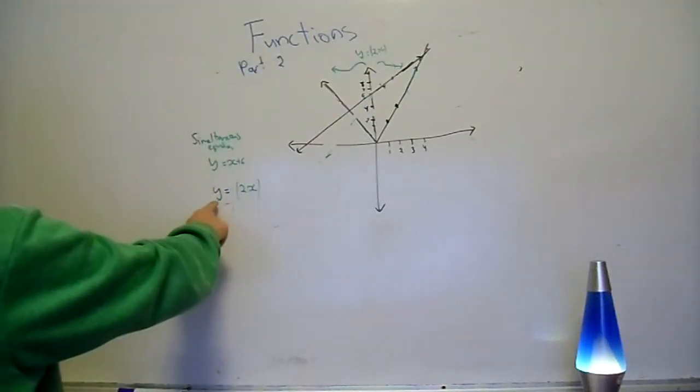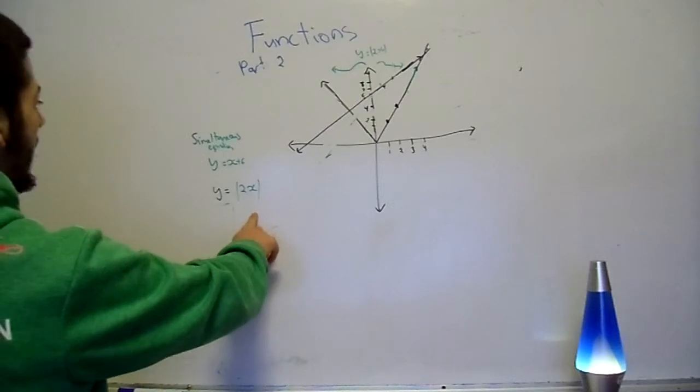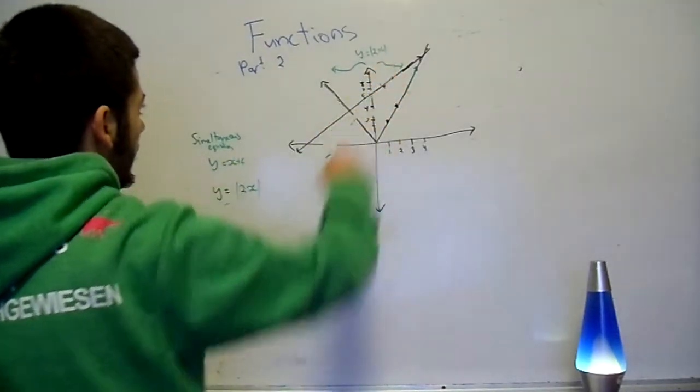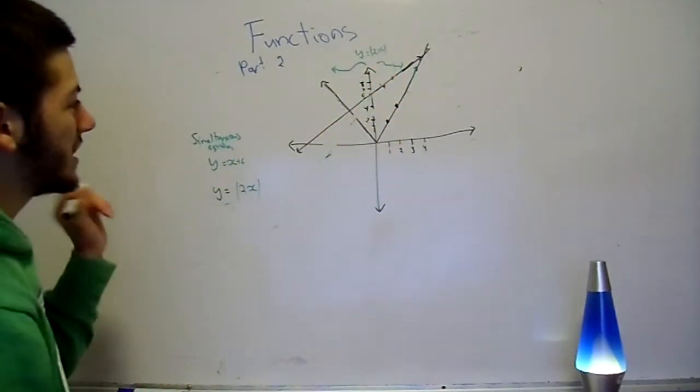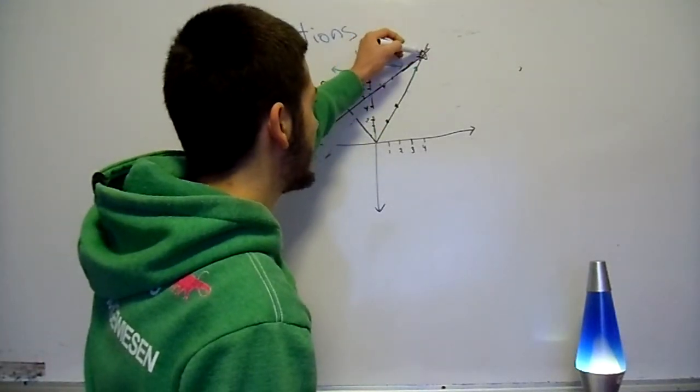And we've got another line, which is y equals absolute value 2x. And that's this one going like that. Now what they're asking is, what are the coordinates of this point here?